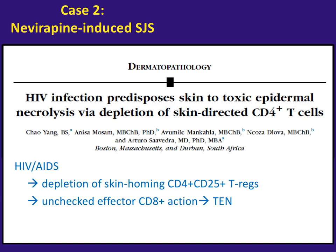More recently, the likely mechanism has been delineated by Dr. Saavedra and a group in Durban, South Africa. They found that depletion of skin-homing CD4-positive, CD25-positive T regulatory cells in the skin allows for unchecked effector CD8-positive action — and that's actually the effector of TEN. As the CD4 count declines, the risk of TEN goes up. The peripheral blood CD4 count correlates with depletion of this cutaneous T regulatory cell population, which appears protective against TEN.